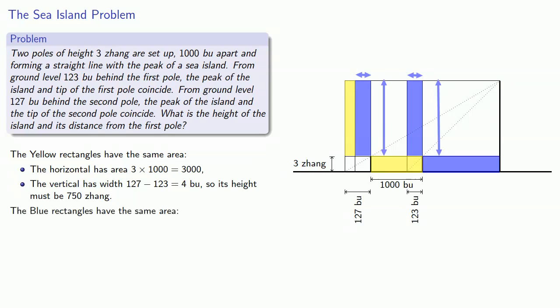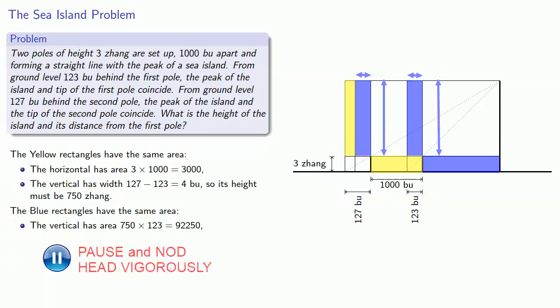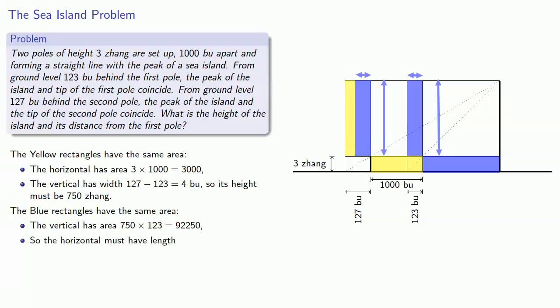But the blue rectangles also have the same area. We know the vertical blue is 750 high by 123 wide, so we know its area. We know the height of the horizontal blue is 3 zhang, and so its length must be... And that gives us the distance of the sea island.